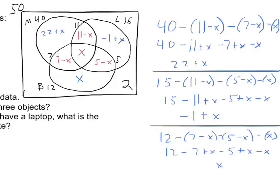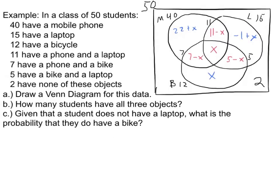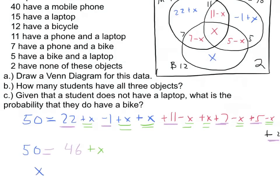Now everything in the entire diagram has to add up to 50. Writing out all regions: 50 equals (22 plus X) plus (negative 1 plus X) plus X plus (11 minus X) plus X plus (7 minus X) plus (5 minus X) plus 2. Combining all constant terms gives 46, and combining all X terms gives X. So 46 plus X equals 50, which means X equals 4.